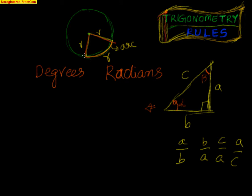Let me repeat that. If I take a circle of radius R, with two radii such that in between them the length of the arc is also R, then this angle — whatever you are making — is known as one radian. The symbol for radian is written with a superscript C. So that is one radian.